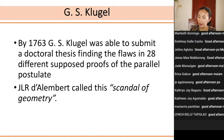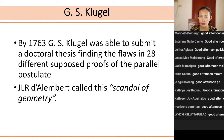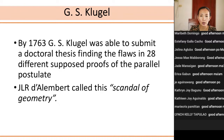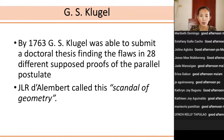Next we have G. S. Klügel. By 1763, G. S. Klügel was able to write a doctoral dissertation about his findings on the flaws of 28 attempted proofs of the parallel postulate. He studied and looked into the flaws of each of those 28 proofs. J. L. R. D'Alembert called this problem 'the scandal of geometry.'